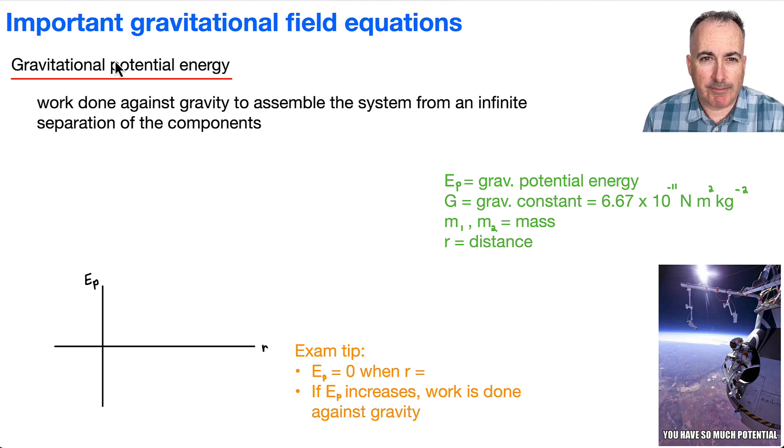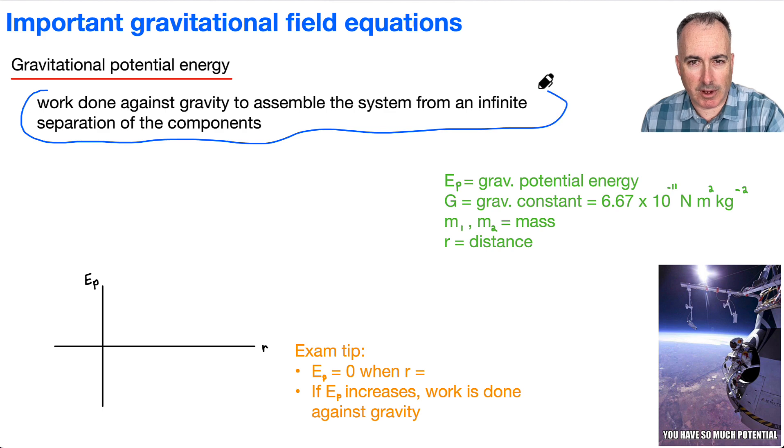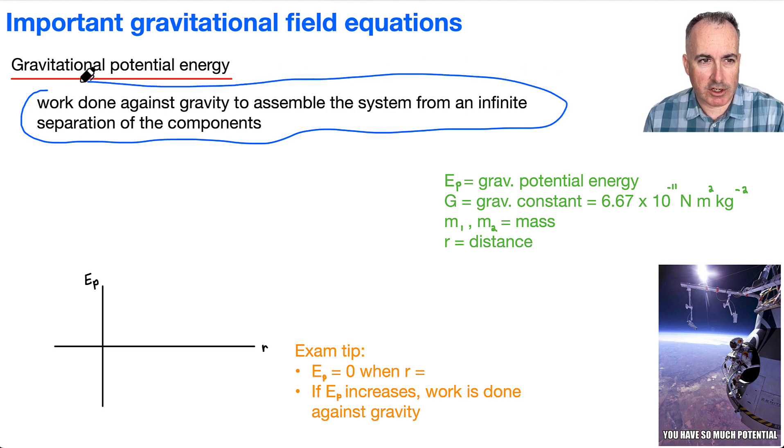Gravitational potential energy we're going to define as the work done against gravity to assemble a system from an infinite separation of the components. So what that means is that if you've got some sort of object that's been built, you start off at infinity and you bring them back to where you are.